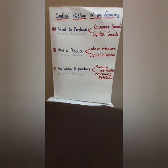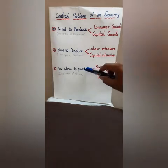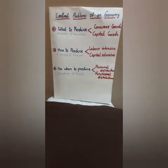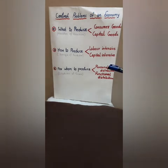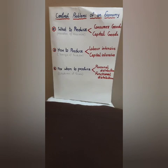The third problem is 'for whom to produce,' which is concerned with the distribution of income. It is a problem related to inequality or GDP concern. There are two aspects: personal distribution and functional distribution. In personal distribution, a producer has to decide how much to produce for the richer section of society or for the poor section of society — the producer must decide which section gets priority and how much quantity is to be produced for both sections.